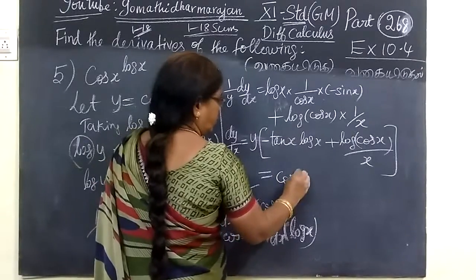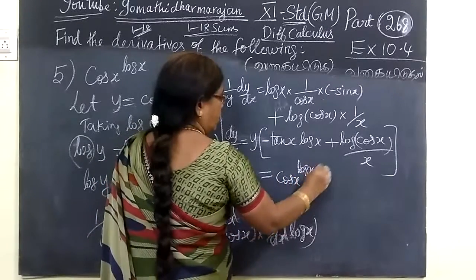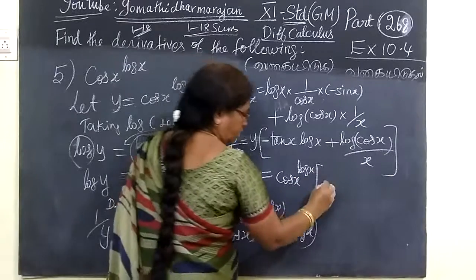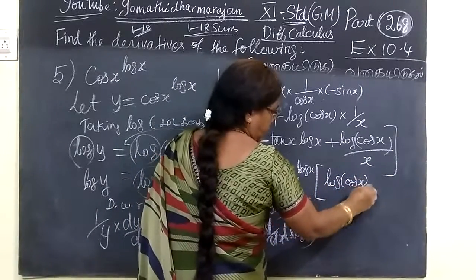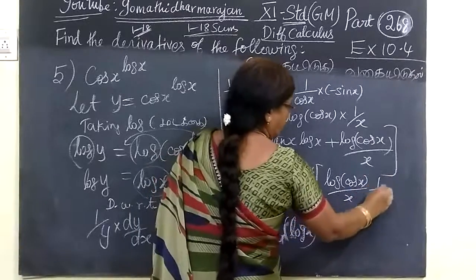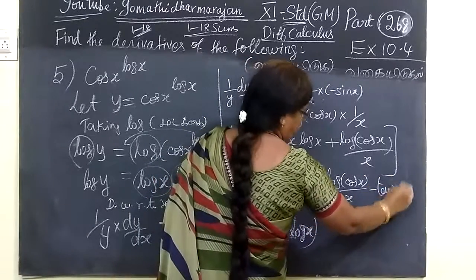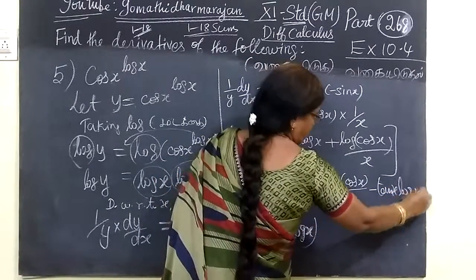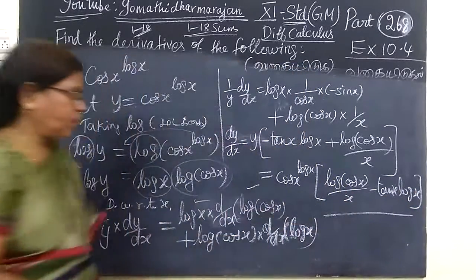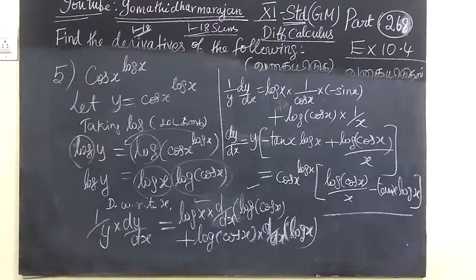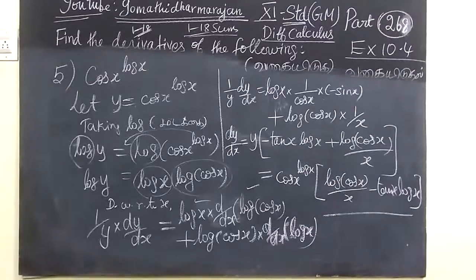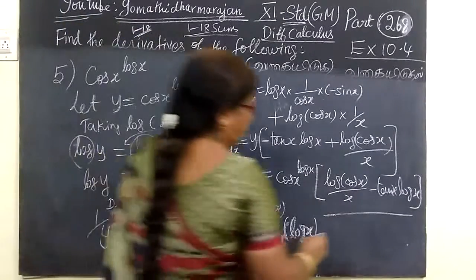Y is cos to the power log x. So the answer is dy by dx equals cos to the power log x times log cos x by x minus tan x log x.